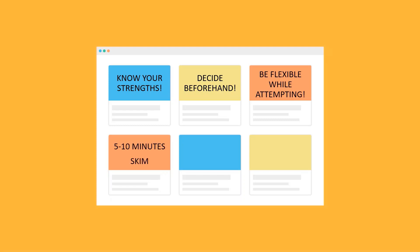As far as time management goes, I suggest spending almost 5-10 minutes to skim through the paper, so that you can check how many questions each section entails and what the difficulty of each one is. Then spend 1-2 minutes on each MCQ, and ideally 30 minutes on each section. Following this would leave you almost 20-30 minutes at the end to attempt all MCQs that you are not sure of but can make a good guess of.